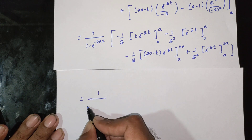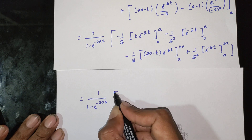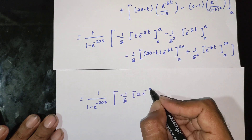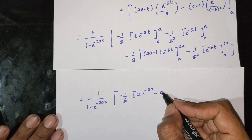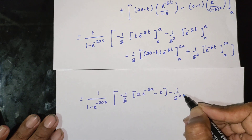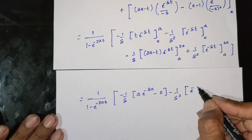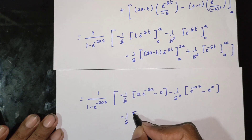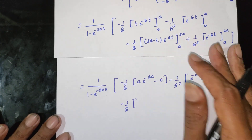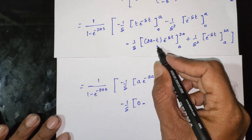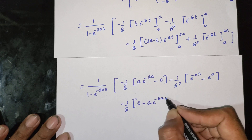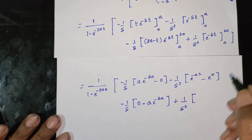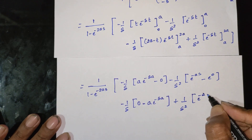Now substituting the limits. We get 1 by (1 minus e power minus 2as), times: minus 1 by s times [a times e power minus as minus 0], minus 1 by s squared times [e power minus as minus 1], plus minus 1 by s times [(2a minus 2a) times e power minus 2as minus 0], and the term (2a minus a) times e power minus as gives minus a e power minus as by s.